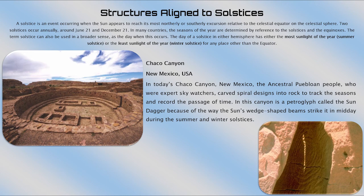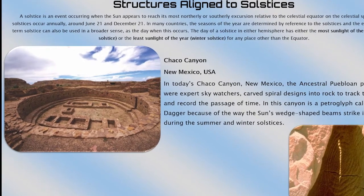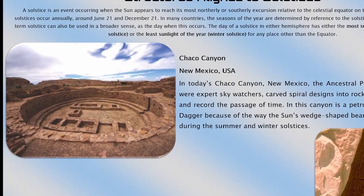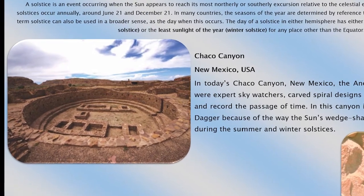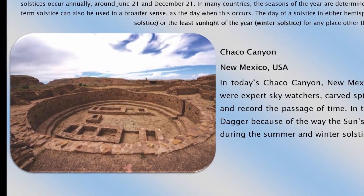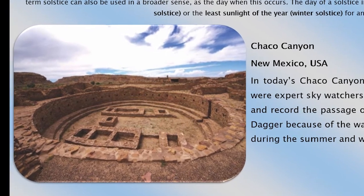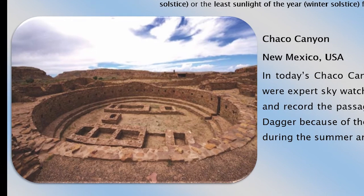Now we're moving on to structures aligned to solstices and equinoxes. A solstice is an event occurring when the sun appears to reach its most northerly or southerly excursion relative to the celestial equator. Two solstices occur annually around June 21st and December 21st. The day of a solstice has either the most sunlight of the year, called the summer solstice, or the least sunlight, called the winter solstice, for any place other than the equator.